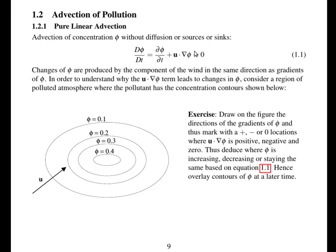So in order to understand why this advection term moves things around, we'll consider pure linear advection. So advection of a tracer or a concentration phi without any source diffusion or sinks, this is simply d phi by dt, rate of change of phi at a point, plus U dot grad phi. So that's the velocity in the same direction as gradients of phi. This is the advection of phi.